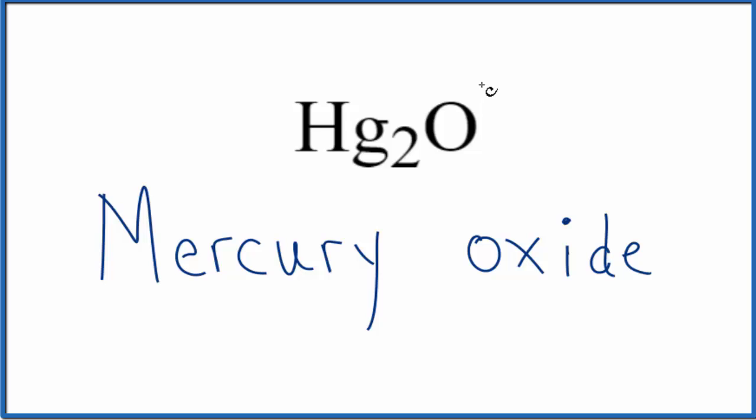So we know oxygen is always 2 minus, so in order for this all to add up to zero, I have net charge of zero, two times that 1 plus. That would give us 2 plus, balance out the 2 minus. So we put a Roman numeral I here for mercury(I) oxide as the name for Hg2O.